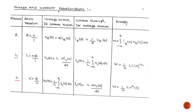Here I am showing one important table. This table is very important for doing problems as well as from an exam point of view. This table covers voltage and current relationships between the RLC passive elements. By remembering this table you can answer any question related to passive elements and solve problems as well.